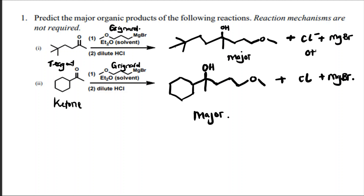These other species are just other products, not the major organic products. These are the major products that will be produced in this reaction. Now let's look at how the reaction mechanisms are occurring. I know they were not required, but you need to know how the reactions occur when you react a ketone with a Grignard reagent.